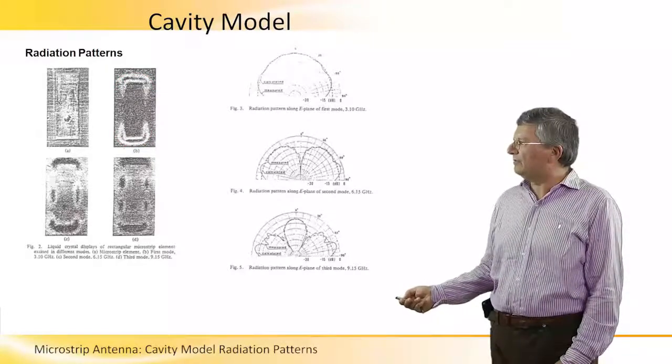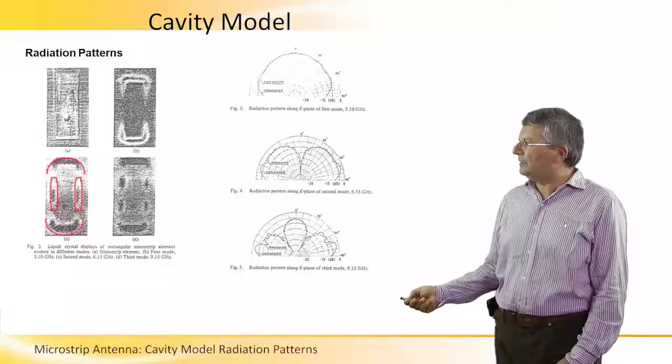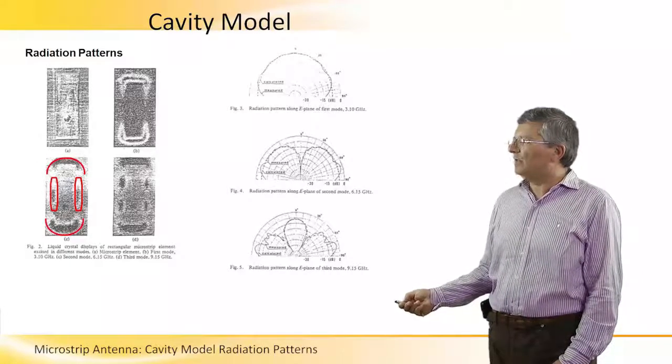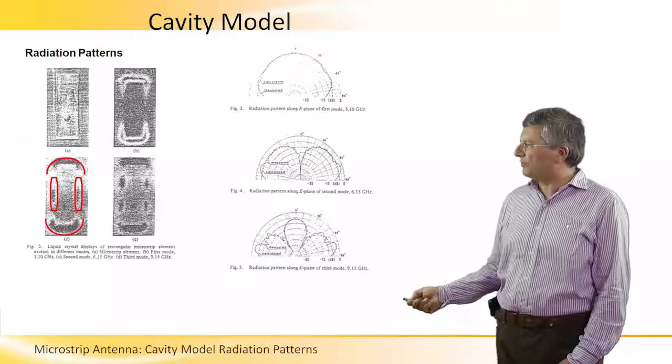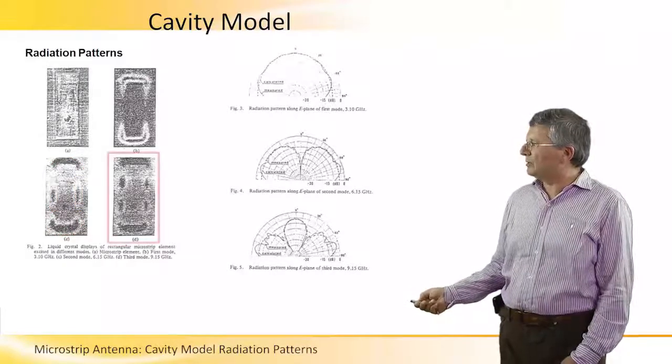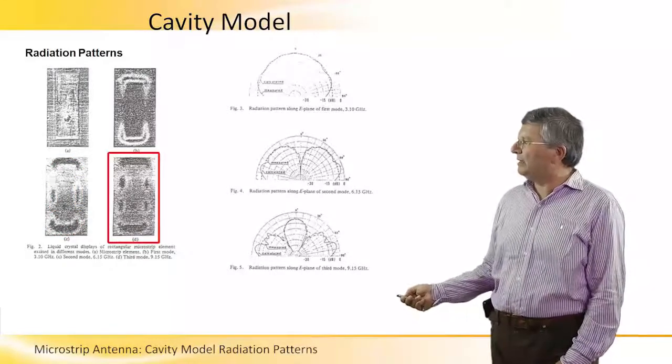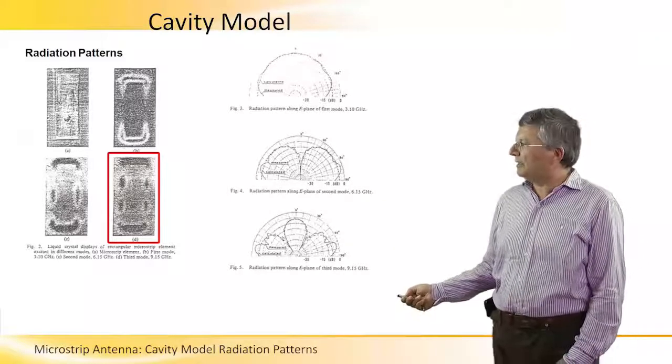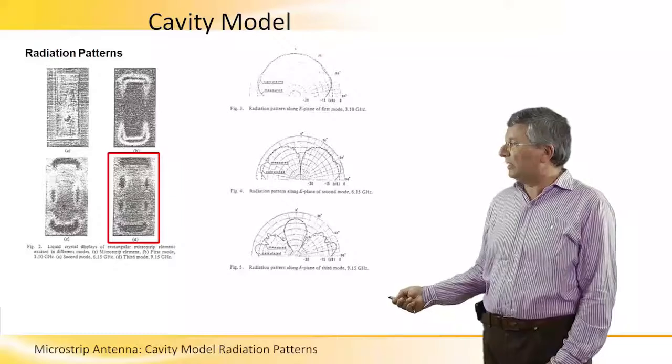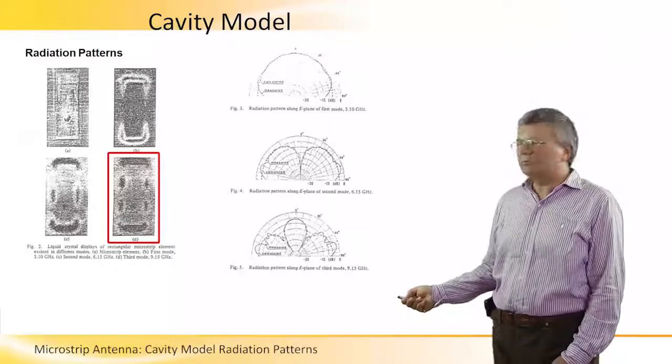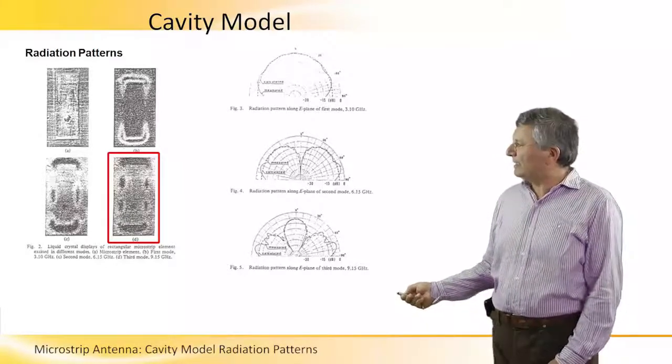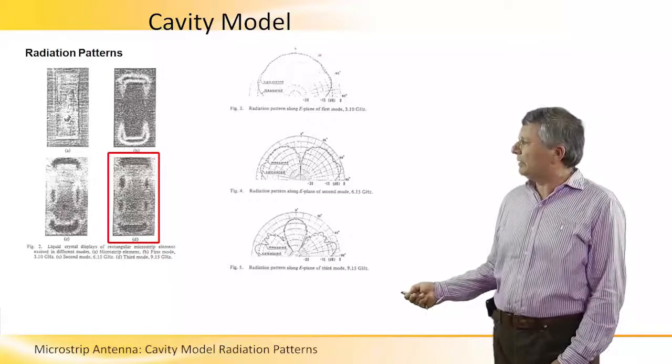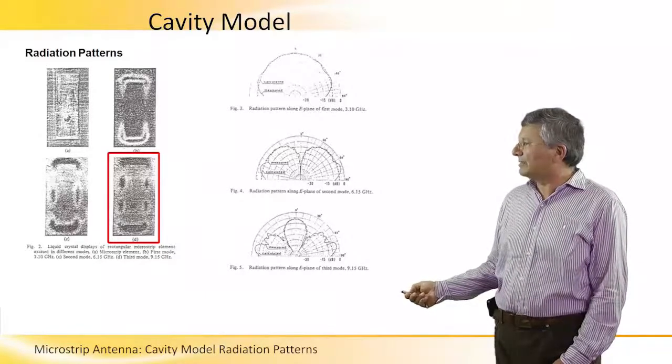Now as we go higher in frequency, we obtain, in addition to those two radiating slots, additional radiation from the other edges of the patch. And if we go to the highest frequency, 9 GHz, we obtain even a finer distribution of the electric field on the edges and all that contributes to the radiation pattern.